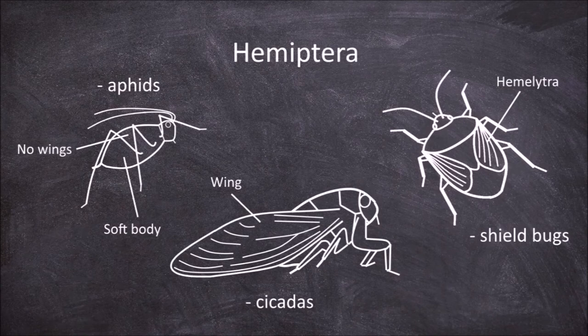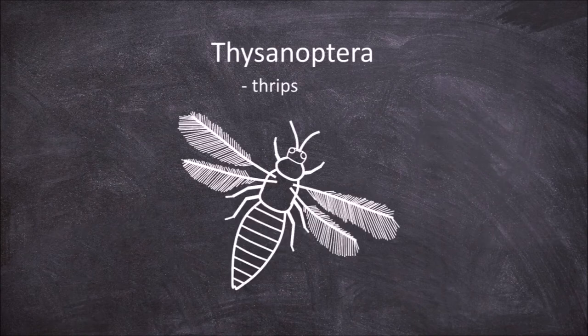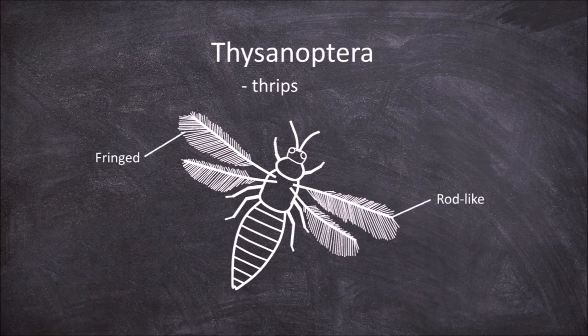The next order is the Thysanoptera, which are the thrips. Members of this order are small, have slender bodies, and their heads are narrower than the thorax. Those that have wings have wings that are rod-like and fringed.